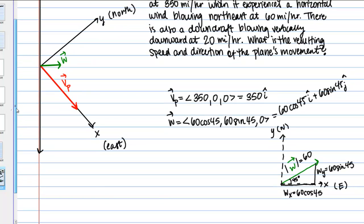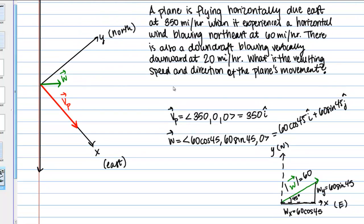So there's one more vector that's going to affect our movement here. We're told that there's also a downdraft blowing vertically downward at 20 miles per hour. So what's that going to look like on our picture? So vertically downward is going to mean in the negative Z direction, like I've drawn in blue here. And I'm going to label this vector D for downdraft. Now this one the components are going to be easy to write, because it's just in a single direction.